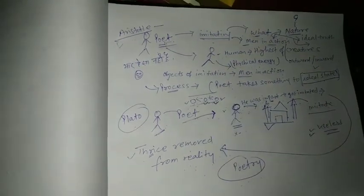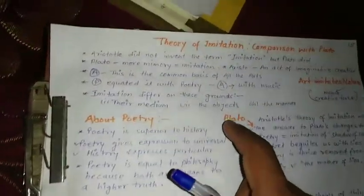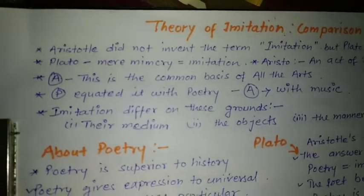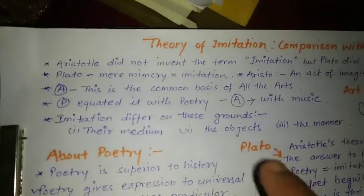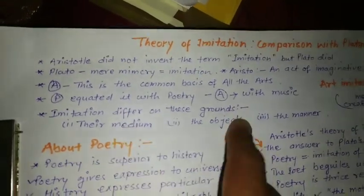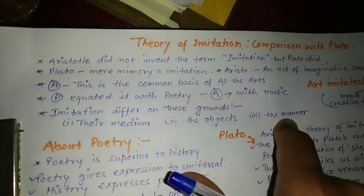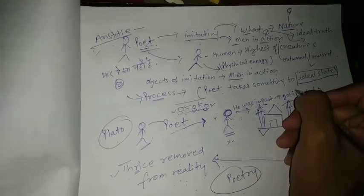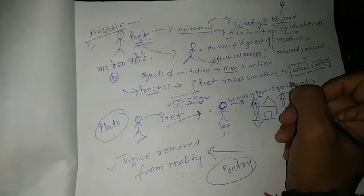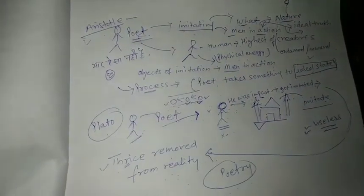In three ways, poetry, we can see here, you can see in my notes, that he says that there are three, imitation differs on these grounds: their medium, their objects, and the manner. And in this way, he calls that poetry is different, or it is not mere imitation. Simply imitation nahi hai, balki kuch ideal state ko hum imitate kar rahe hai, so that we can achieve that ideal state. So, this is the difference between Plato and Aristotle's theory.